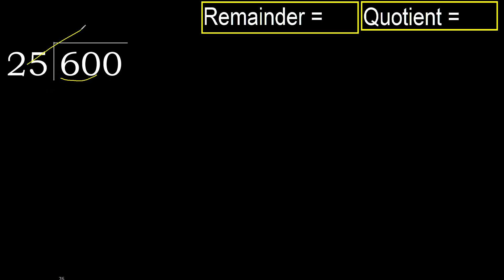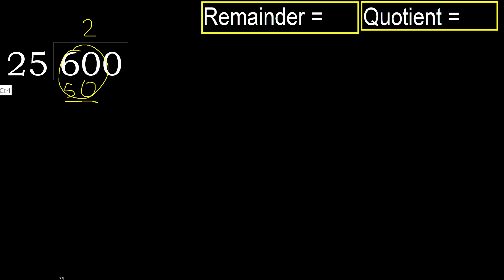With 60, 25 multiplied by which number is nearest to 60 but not greater? 25 multiplied by 3 is 75, which is greater. Multiply by 2: 50 is not greater. Subtract: 60 minus 50 equals 10. Next.